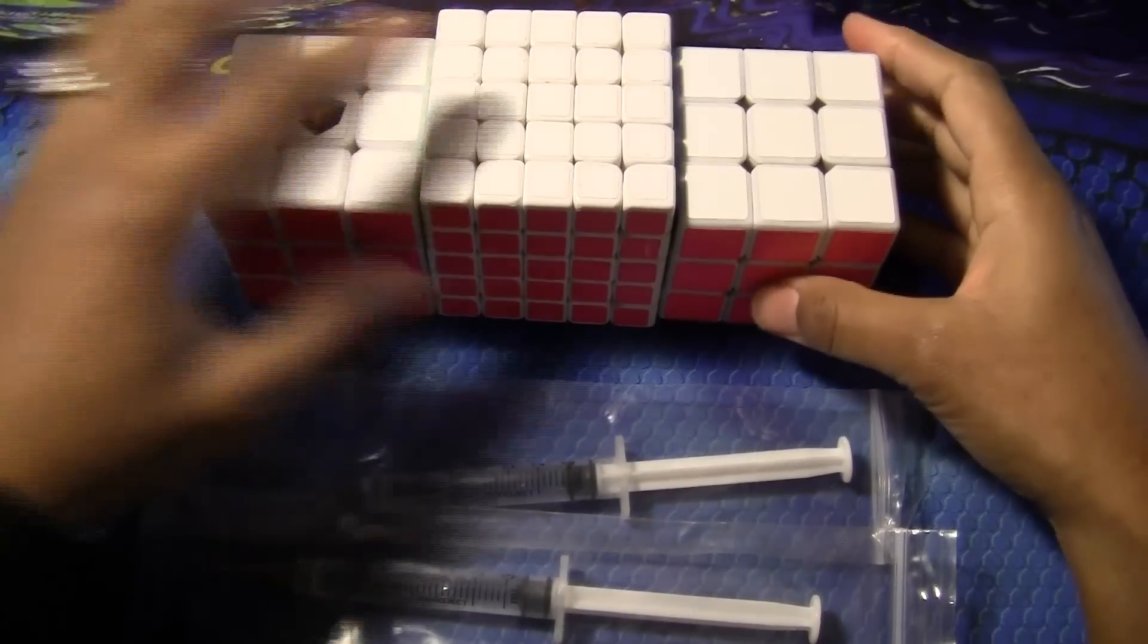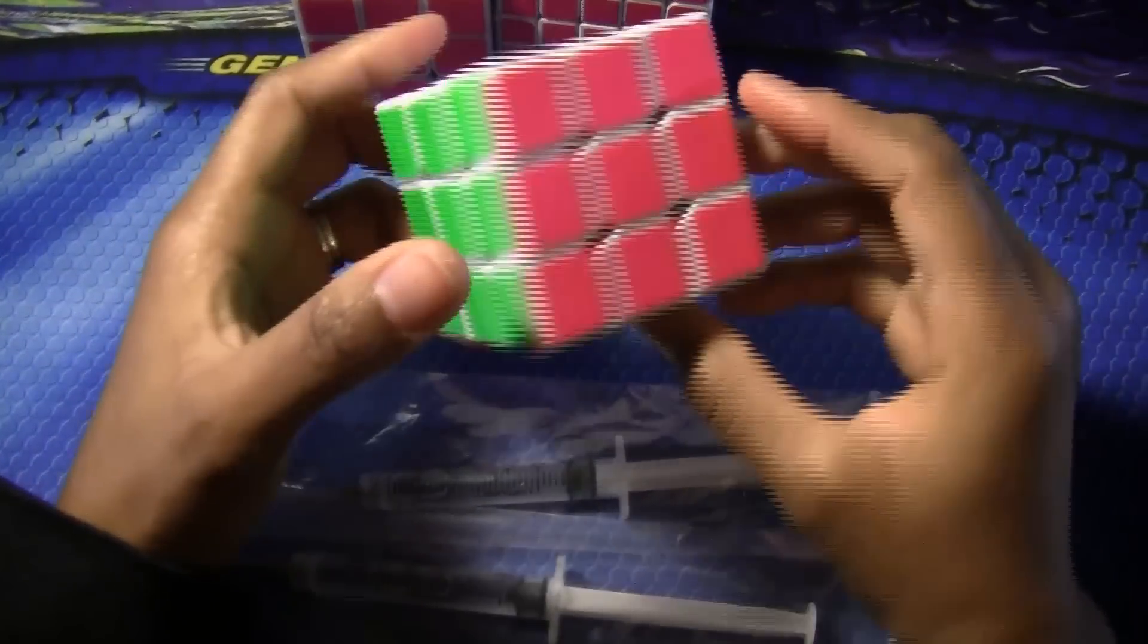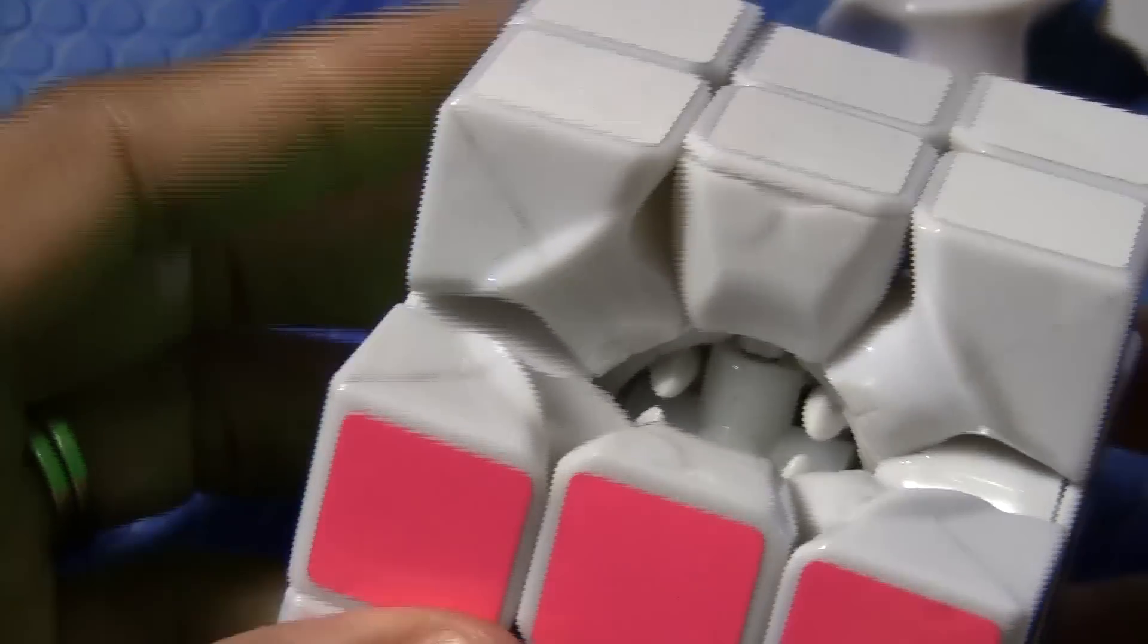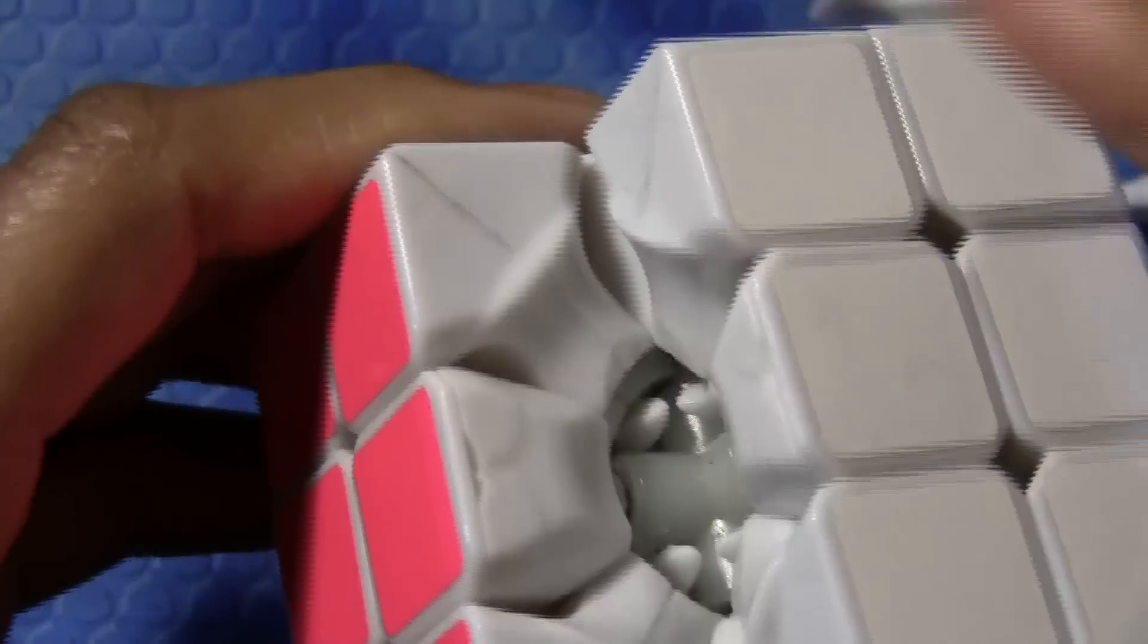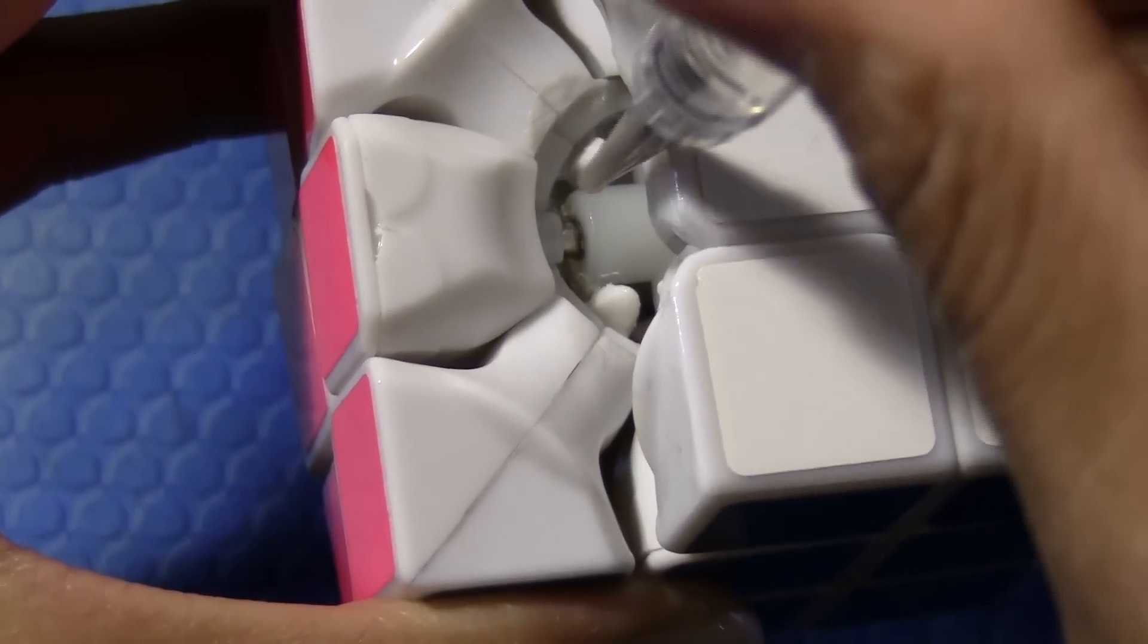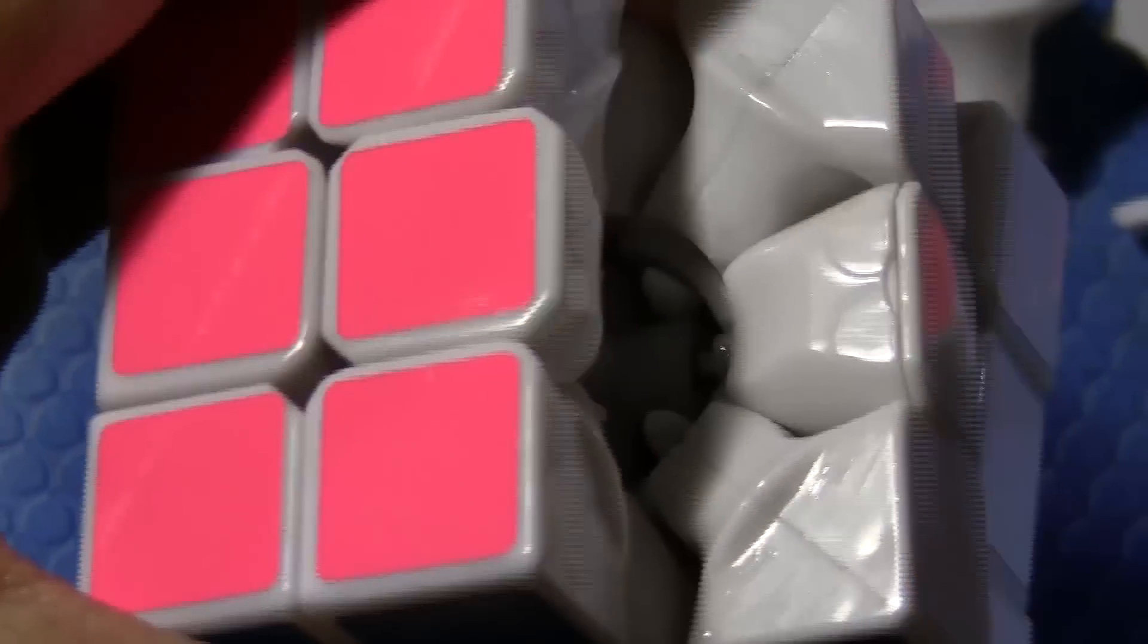Alright guys, let's start lubing. I'm going to start off with the Zanshi. I'm going to use control in this one and see how it works out. So the way I lube cubes is a bit different from how others would lube it. I just take out three pieces and I pull apart, and here's the control. I put some in there and I do that for all the sides.